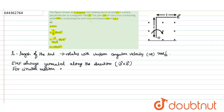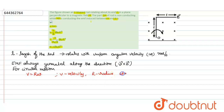For circular motion, the velocity is given by v = r omega, where v is the velocity, r is the radius of rotation, and omega is the angular velocity. Here r is the distance from the axis of rotation, which is equal to the length of the rod.